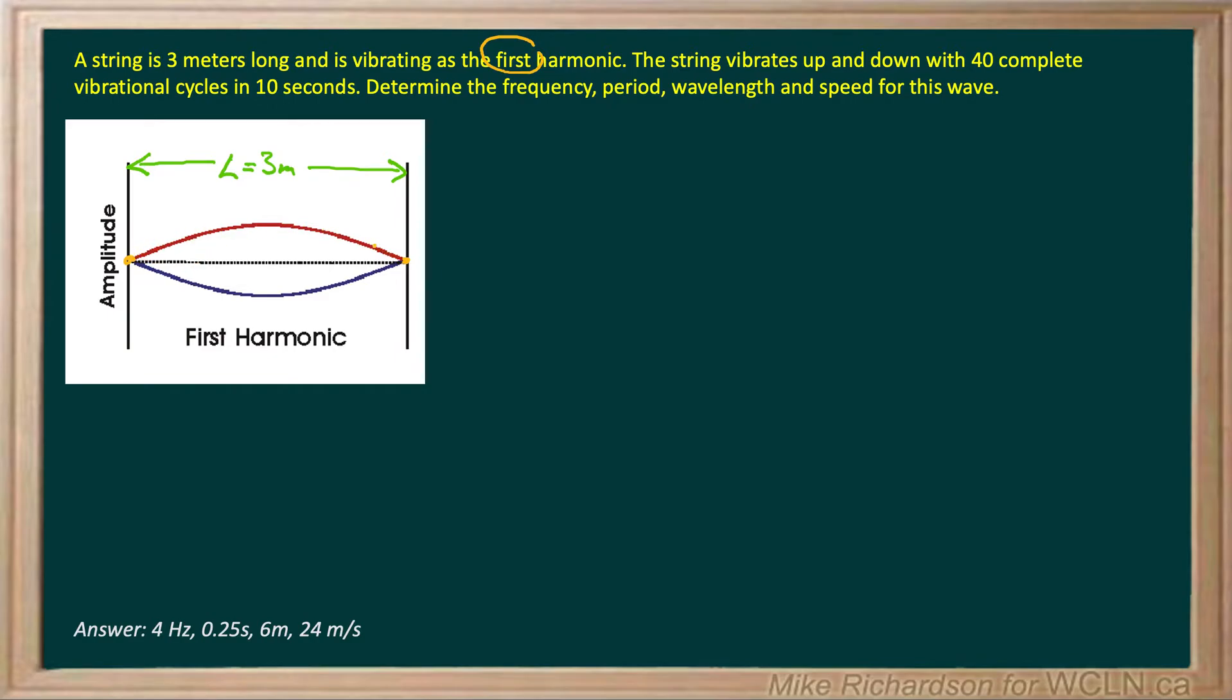At any given point in time we either have a crest or a trough, and a full wave is a crest and a trough. So let's start by figuring out the wavelength. Since we're only seeing half a wave and the length of that string is three meters long, the wavelength must be double that. So that's the first step. Our wavelength is six meters.